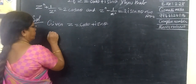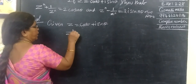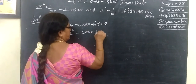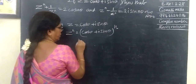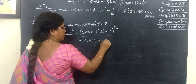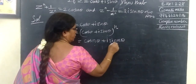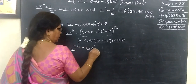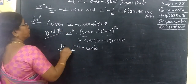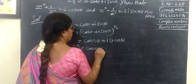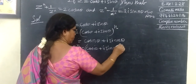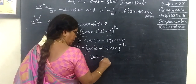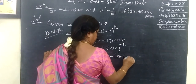So z equals cos theta plus i sin theta. Applying De Moivre's theorem: cos theta plus i sin theta whole power n equals cos n theta plus i sin n theta. And 1 by z power n equals cos theta plus i sin theta whole power minus n, which by De Moivre's theorem gives cos of minus n theta plus i sin of minus n theta.